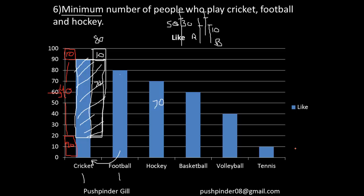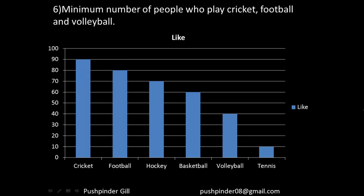This approach gives you the answer in a very efficient manner, rather than building up equations and trying to solve that way — which would be very difficult. So I hope this approach helps you understand how to solve set theory questions. In the next question, you have to find the minimum number of people who play cricket, football, and volleyball.